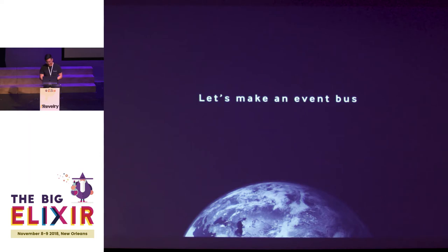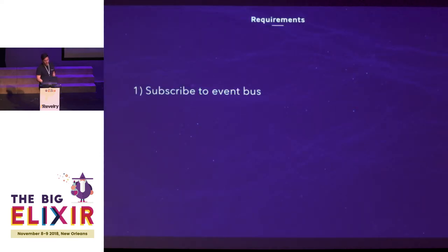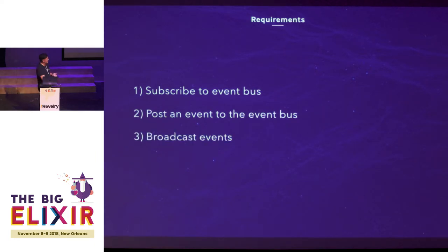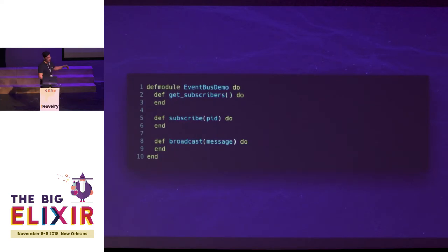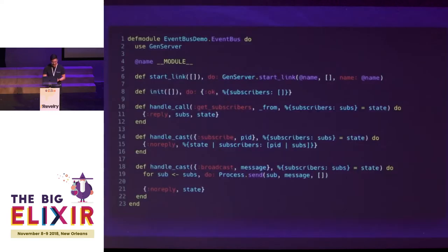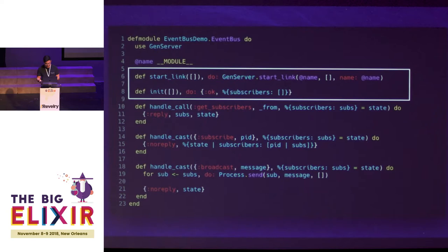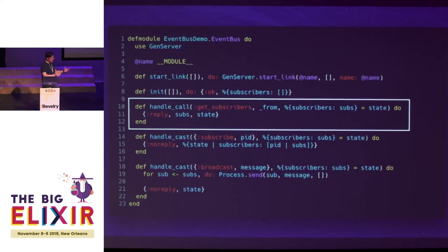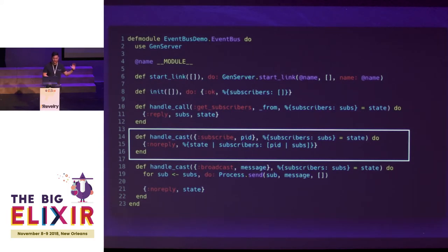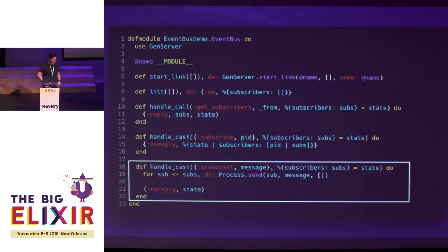I promised we'd make an event bus, so here we go. The requirements are: subscribe to the event bus, post an event to the event bus, broadcast the events, and not overload our consumers. The first example just uses a GenServer underneath. We give it a name so it's easy to call later, and initialize it with an empty list of subscribers. GetSubscribers passes the list back as a response. Subscribe appends the PID to the subscribers. Broadcasting sends the message to every subscriber — and that's it.